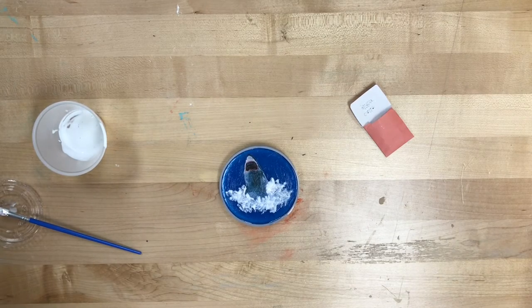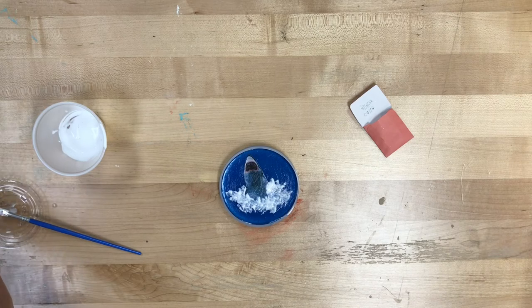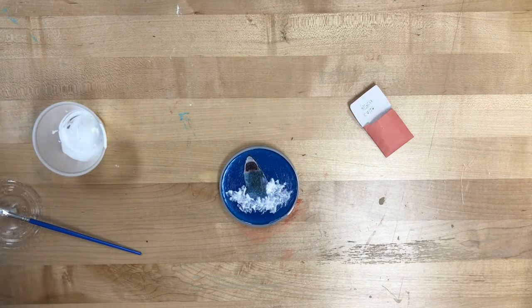Otherwise, when we put the final resin coating on, it'll turn kind of a milky color. So make sure that that glue is 100% dry before we go on to the final part of our coaster.